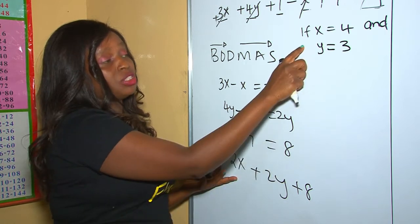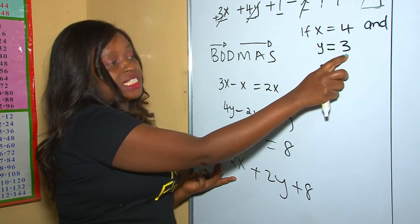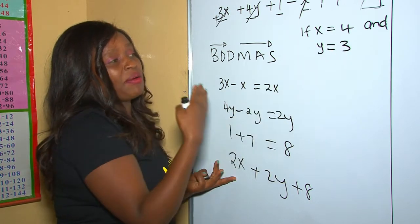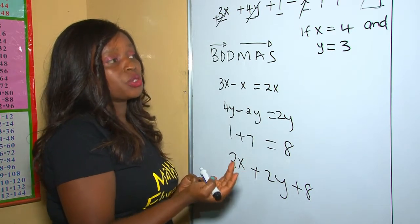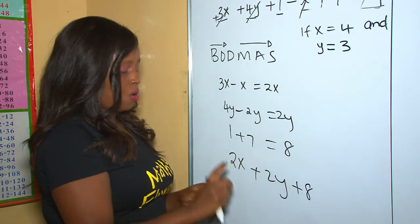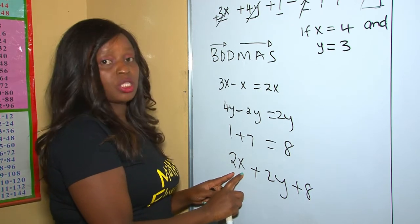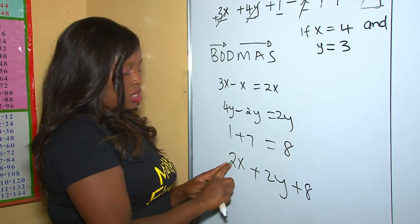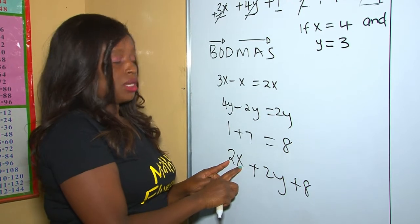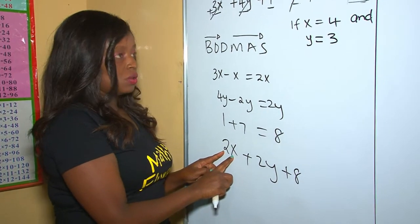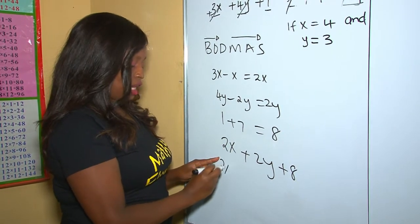The values we have been given are: x is 4 and y is 3. So whenever we have x, we substitute or replace it using 4. Our x is here, so 2x means 2 times the value of x, and the value of x is 4, which means 2 times 4.